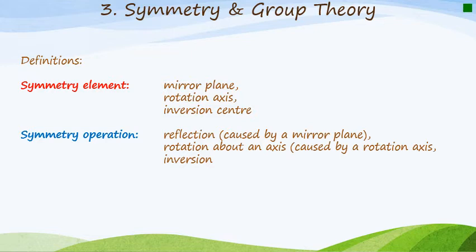The first one is a symmetry element. Now that means that this is a thing that is available that causes something to happen. So for example, we have a mirror plane, and we have a rotation axis, or we have an inversion center, and I will explain more about these a little bit later on.